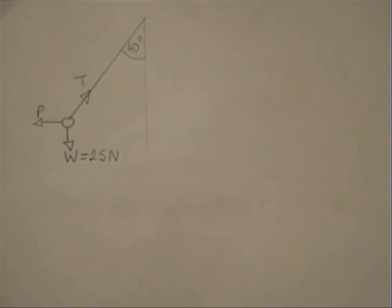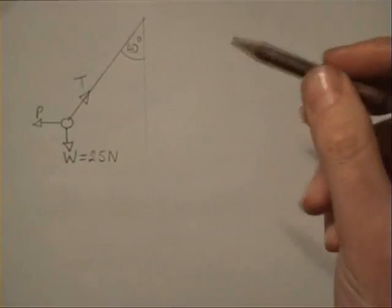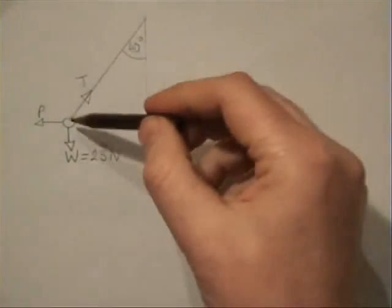To find the horizontal and vertical components of T, I'm going to draw a vector arrow separate from the diagram because I don't like mixing up vectors with pictures of objects.